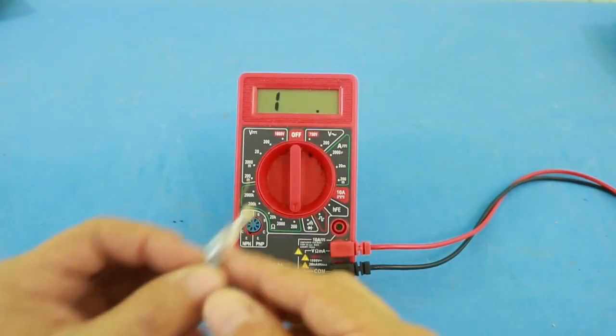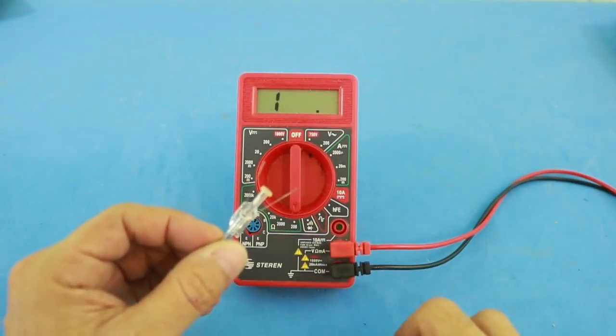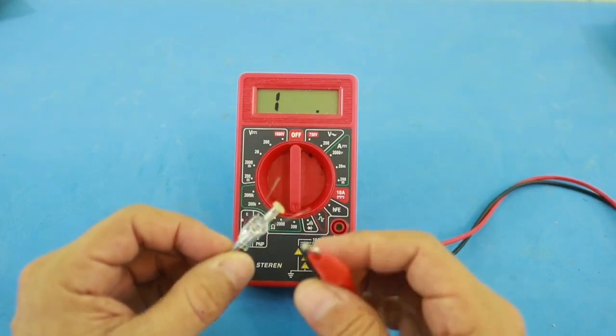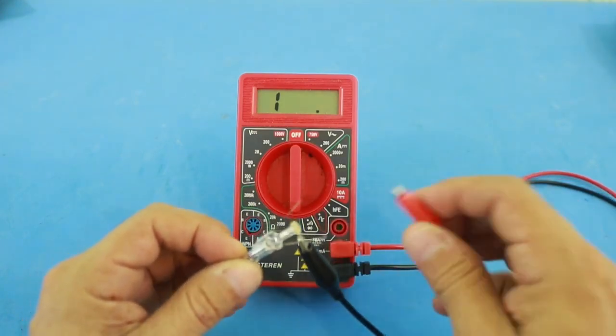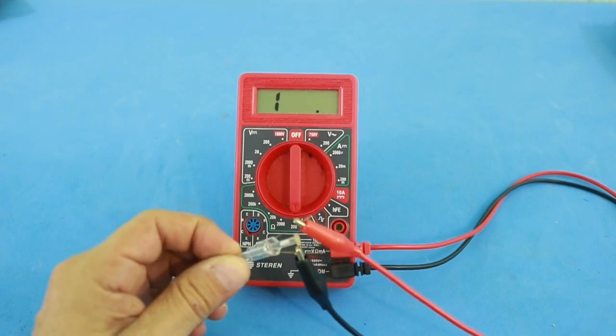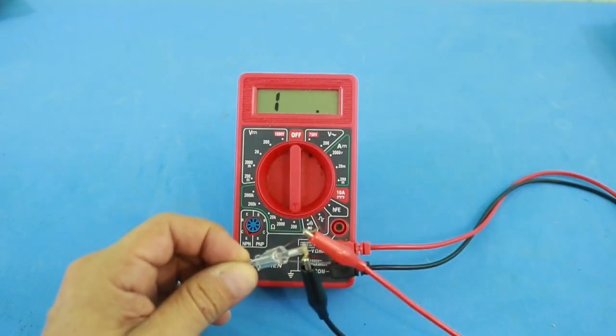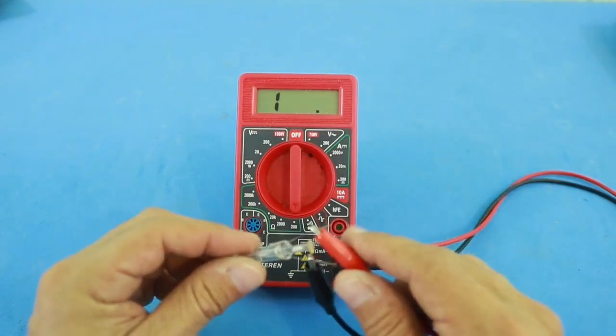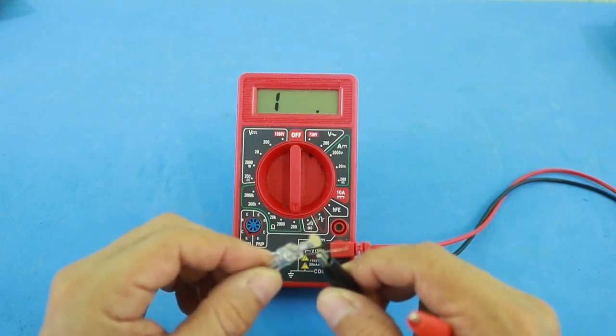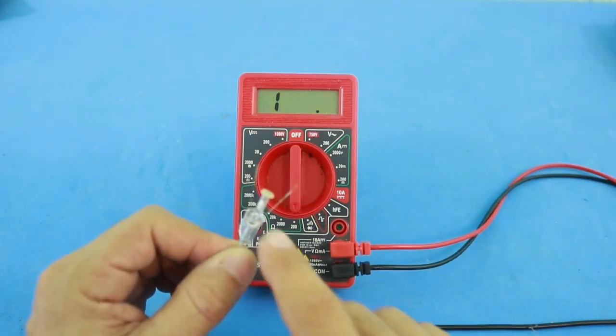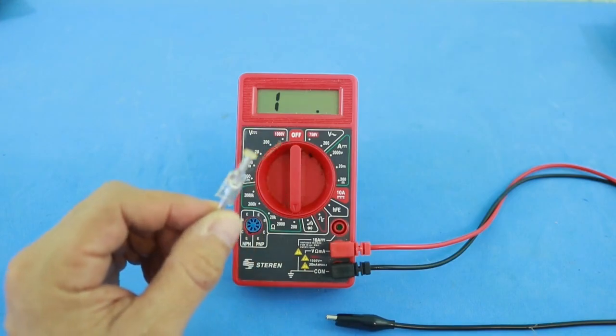Let's check that there is no conduction between the two wires. I'm going to connect them to the multimeter and you can see that it reads infinite resistance. Therefore, the two wires are connected to the glass but there is no connection between them.